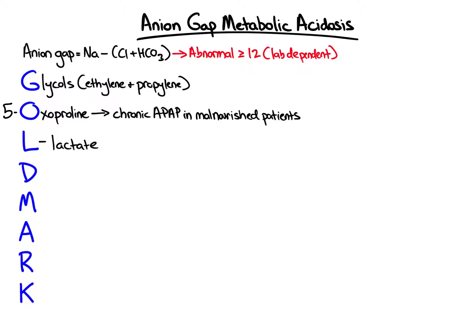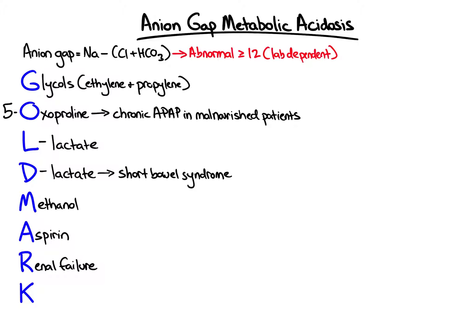D stands for D-lactate, the less common isomer produced when bacteria in the colon are exposed to large amounts of unabsorbed carbohydrates, like in cases of short bowel syndrome. M stands for Methanol. A stands for Aspirin. R stands for Renal failure. And K stands for Ketoacidosis, including diabetic ketoacidosis (DKA), alcoholic ketoacidosis (AKA), and starvation ketoacidosis.